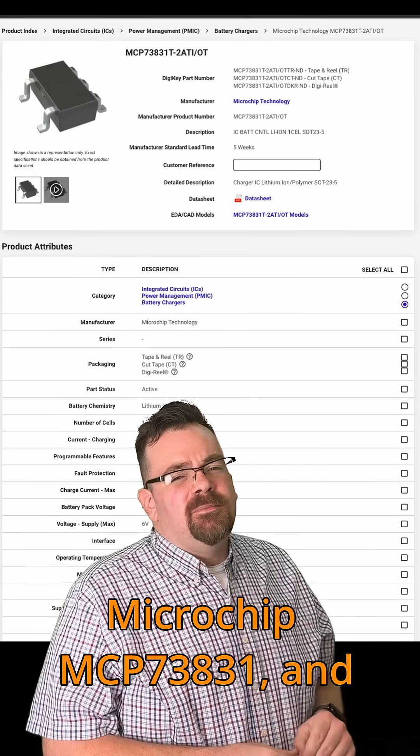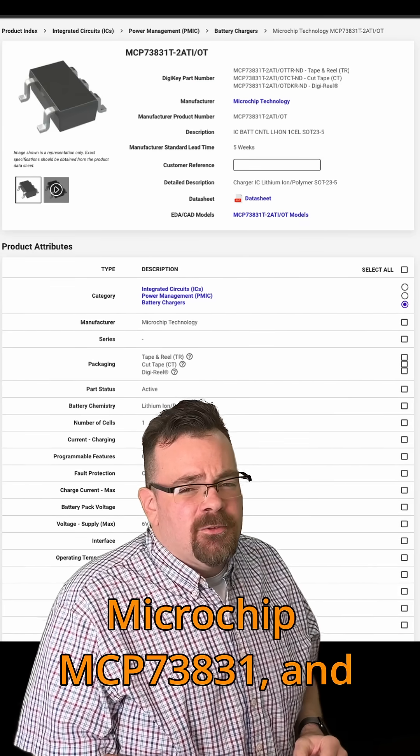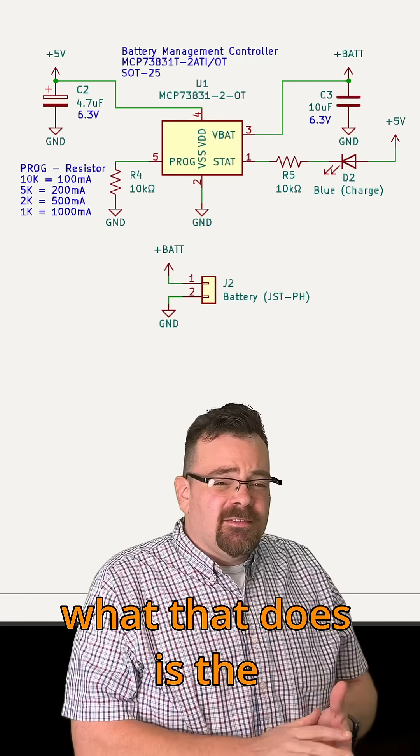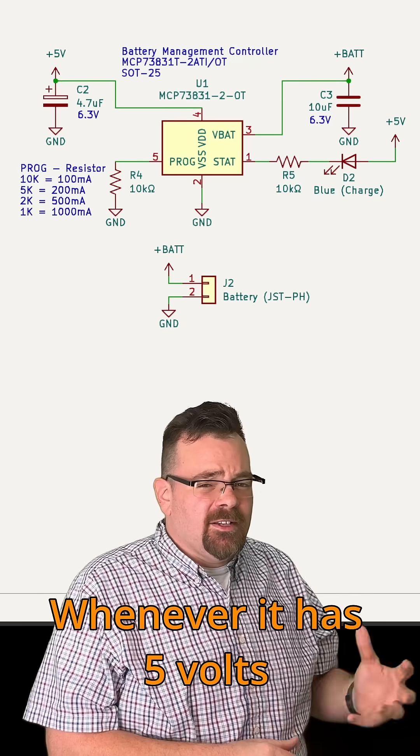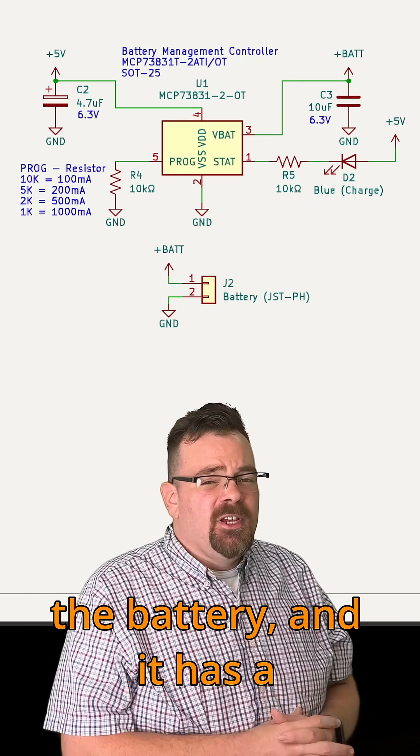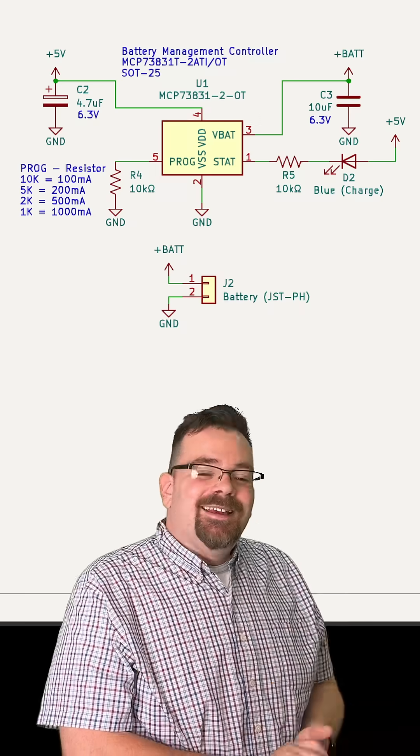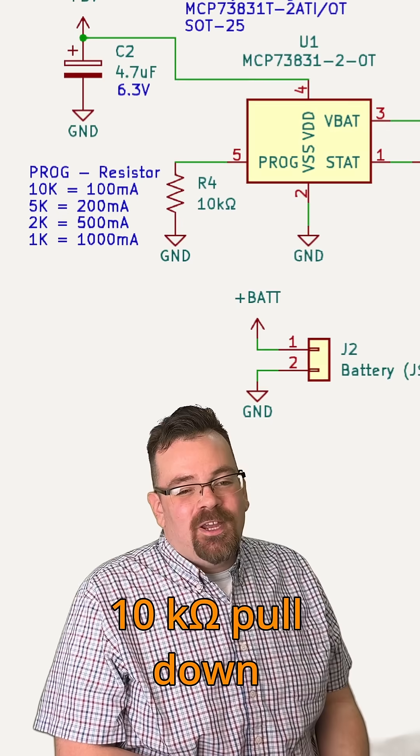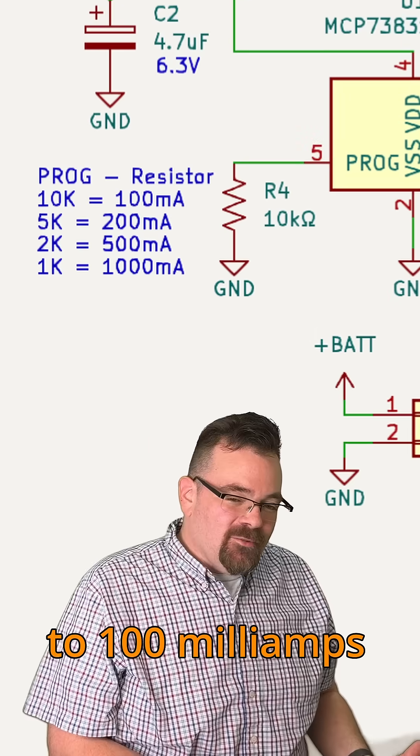Next, I'm using a microchip MCP73831, and what that does is the battery charging. It's a charge manager. Whenever it has 5 volts coming in, it'll charge the battery, and it has a programming pin. In this case, I have a 10 kiloohm pulldown resistor, which limits it to 100 milliamps charge.